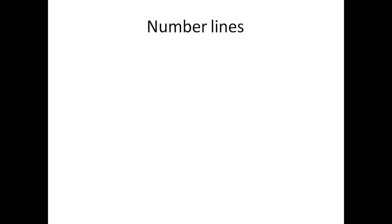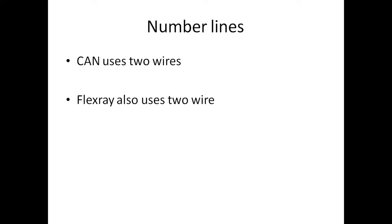With respect to number of lines, CAN is used basically to reduce the number of wires going in and around the vehicle. Let us see the comparison with respect to number of wires. CAN uses two wires which is called as CAN high and CAN low. FlexRay also makes use of two wires which is called as bus plus and bus minus.